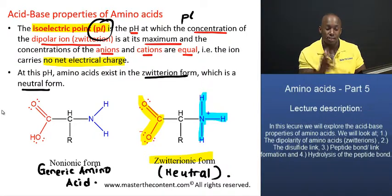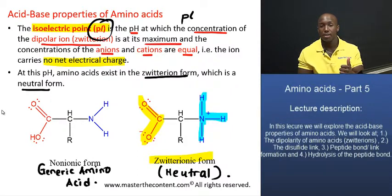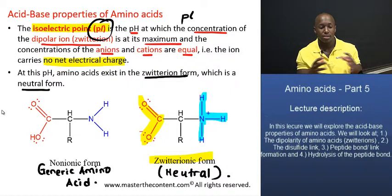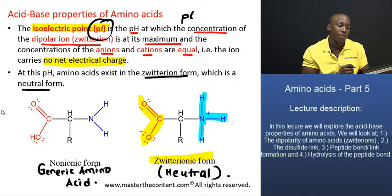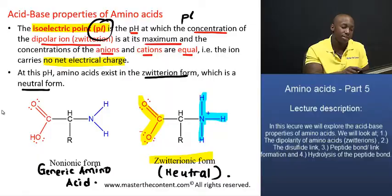You need to take away that and you need to understand what the isoelectric point is. So at the isoelectric point, the concentration of the zwitterion is at its maximum, and the concentration of the cations and the anions are equal, so they cancel each other out. And for that reason, the ion will carry no net electrical charge.